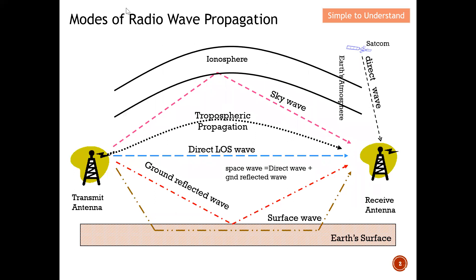This diagram shows all the possible modes of radio wave propagation that I'll discuss in this series. Starting from the top: this is what we call the sky wave, where the transmitter antenna shoots the electromagnetic wave toward the sky, it hits the atmosphere, reflects back, and is received by the receiver antenna.